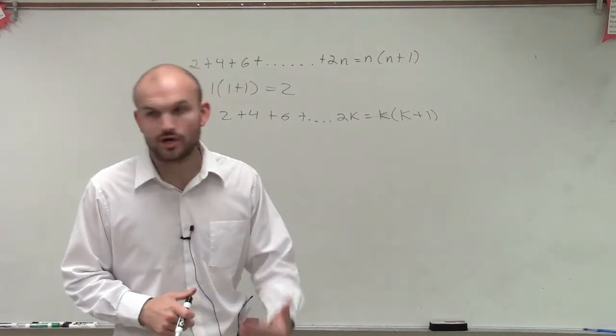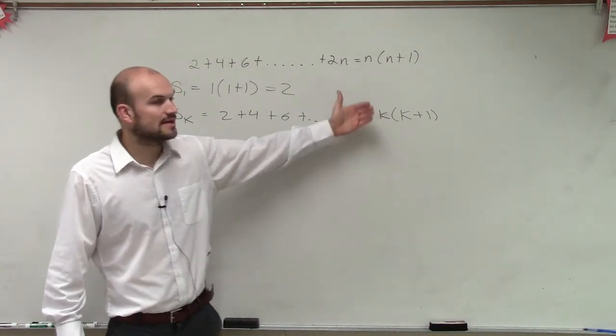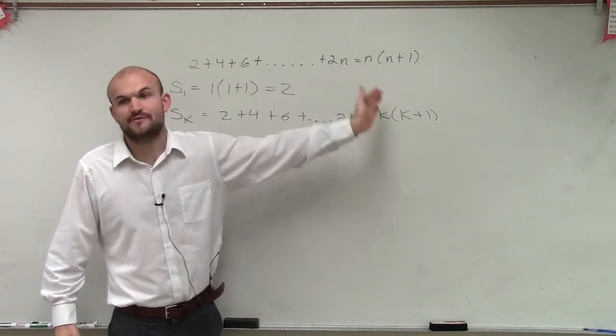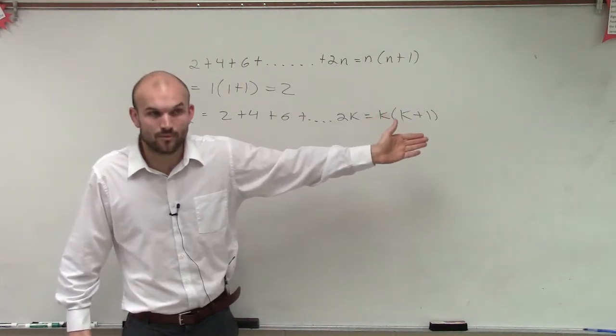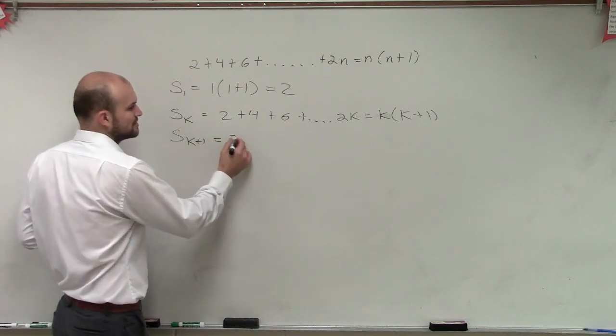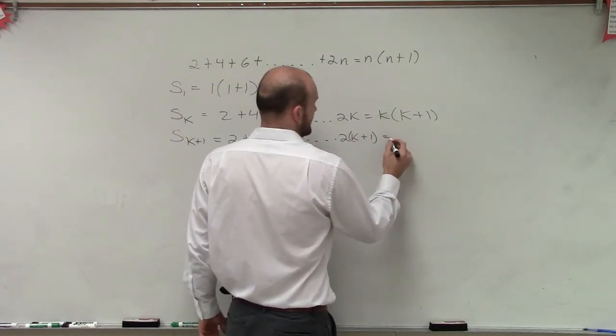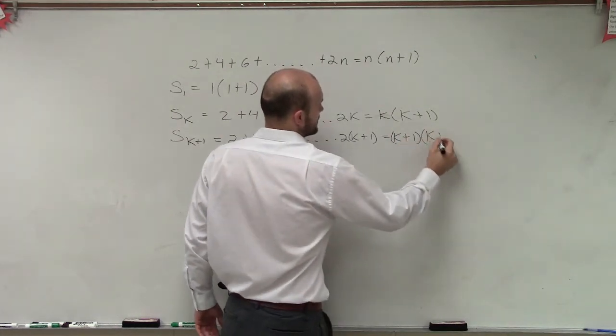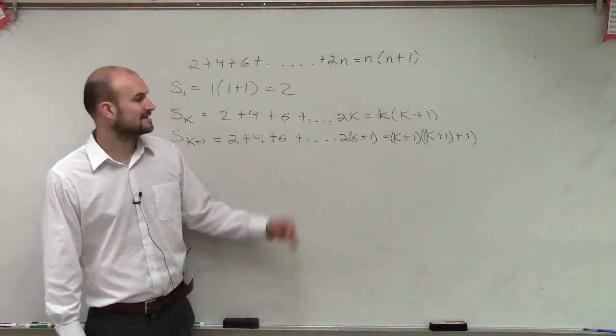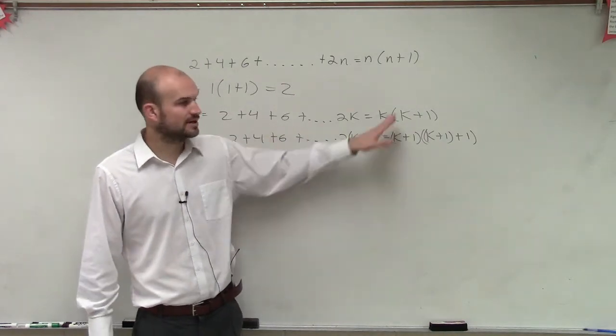Now what we're trying to show: if it's true for our k term plus the next term in the sequence - you guys understand that this sequence goes on forever - so if I have 2k, what would be the next term after 2k? 2k plus 1. So what we want to do then is say that I want it also to be true for 2k plus 1 equals 2 plus 4 plus 6 plus dot dot dot 2k plus 1 equals k plus 1 times k plus 1 plus 1. So what I simply did is I took k plus 1 and I plugged it in where there was a k.